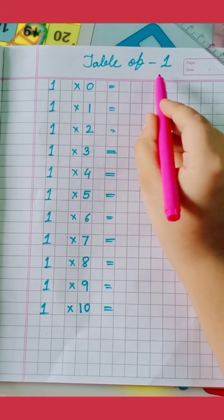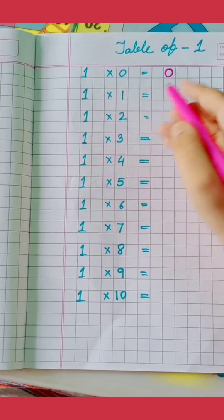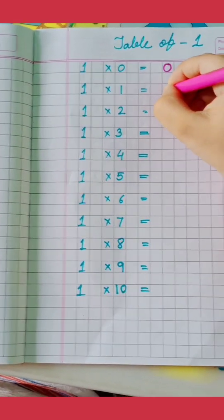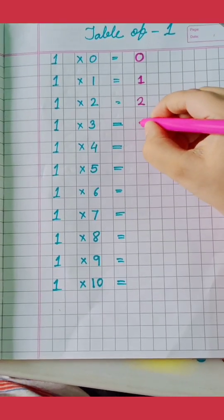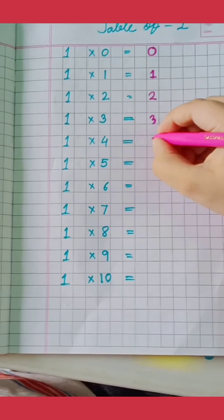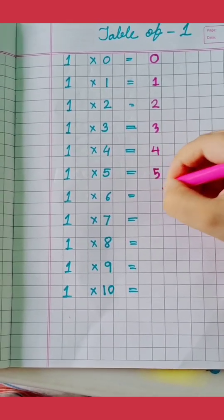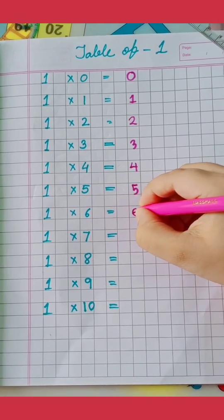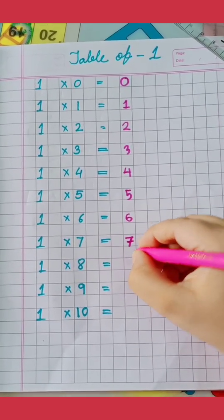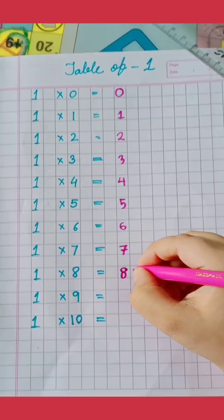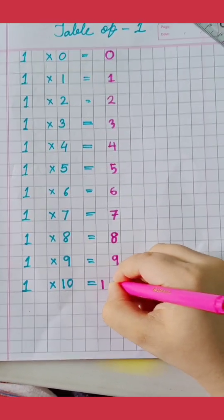Table of 1. 1 0's are 0, 1 1's are 1, 1 2's are 2, 1 3's are 3, 1 4's are 4, 1 5's are 5, 1 6's are 6, 1 7's are 7, 1 8's are 8, 1 9's are 9, 1 10's are 10.